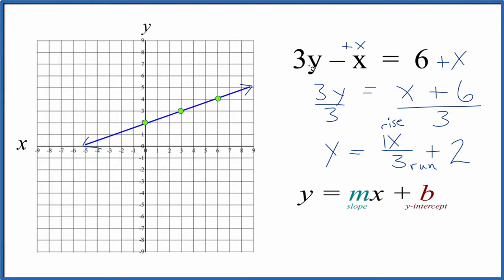You could put values in for y, get values for x, and then you could figure out and do a table of values to draw the line. You'll get the same line either way. This is Dr. B graphing 3y minus x equals 6. Thanks for watching.